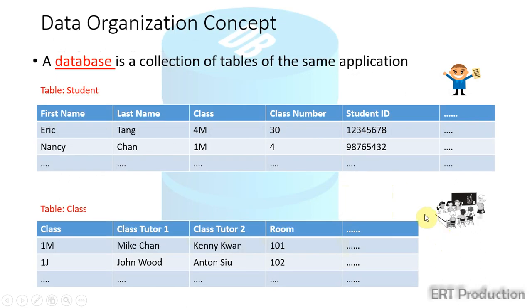A database is a collection of tables of the same applications. To take an example of a school, we can have a table of students' data and another table of class data. For example, a class has properties of class name, class tutors, and room, etc.